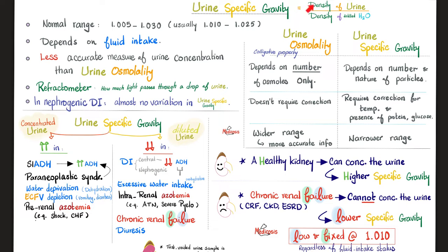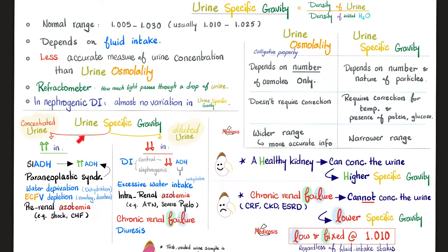Urine specific gravity is the density of the urine relative to the density of distilled water. The normal range of urine specific gravity is between 1.005 and 1.030. Most of the time it's between 1.010 and 1.025. Just like urine osmolality, it depends on your fluid intake. If you drink too much water — overhydrated — your urine will be dilute with low specific gravity and low osmolality. Conversely, if you drink less water — dehydrated — you'll have very concentrated urine, meaning high specific gravity and high osmolality.